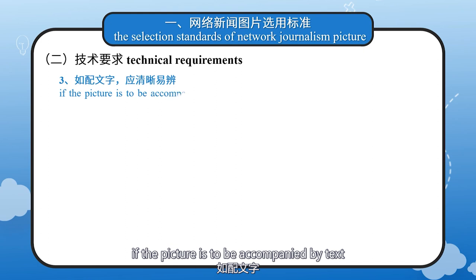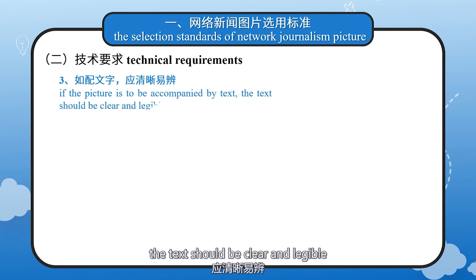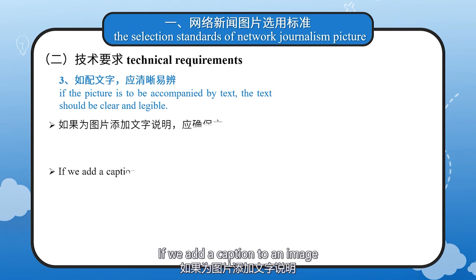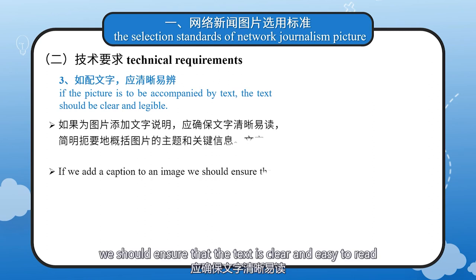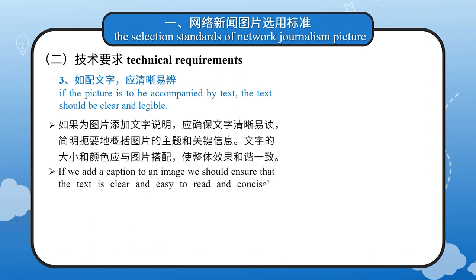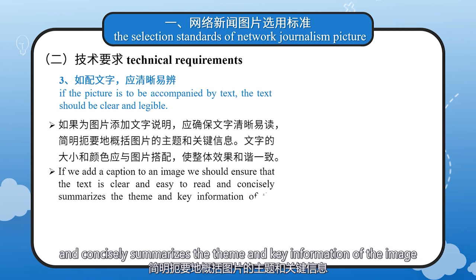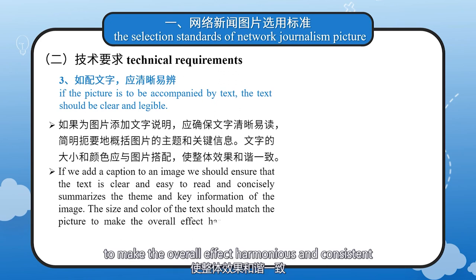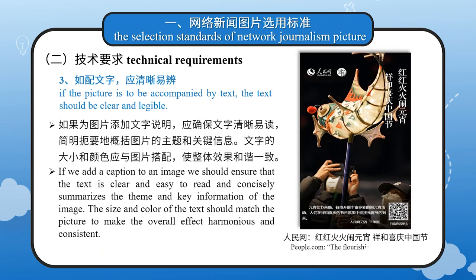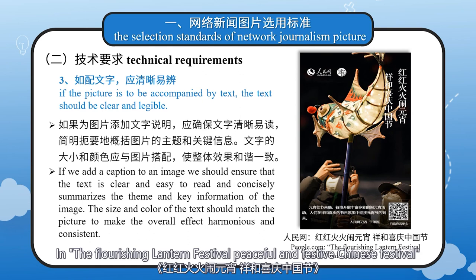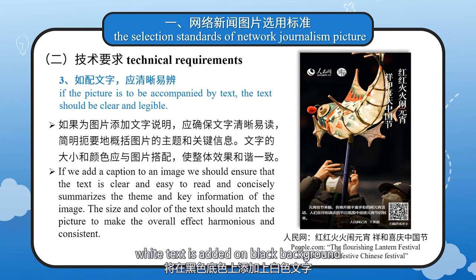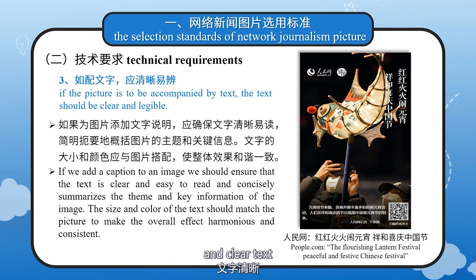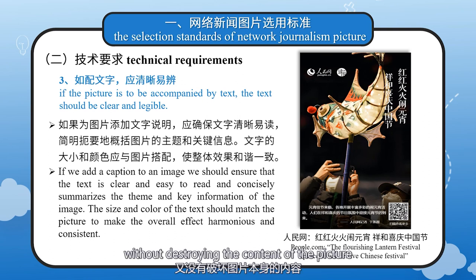Third, if the picture is to be accompanied by text, the text should be clear and legible. If we add a caption to an image, we should ensure that the text is clear and easy to read, and concisely summarizes the theme and key information of the image. The size and color of the text should match the picture to make the overall effect harmonious and consistent. For example, in the people.com picture news on the flourishing lantern festival — a peaceful and festive Chinese festival — white text is added on a black background with obvious contrast and clear text, easy to read without destroying the content of the picture.